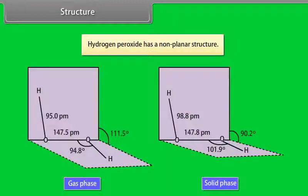Structure: Hydrogen peroxide has a non-planar structure. In gas phase, the dihedral angle is 111.5 degrees. In solid phase at 110 Kelvin, the dihedral angle is 90.2 degrees.